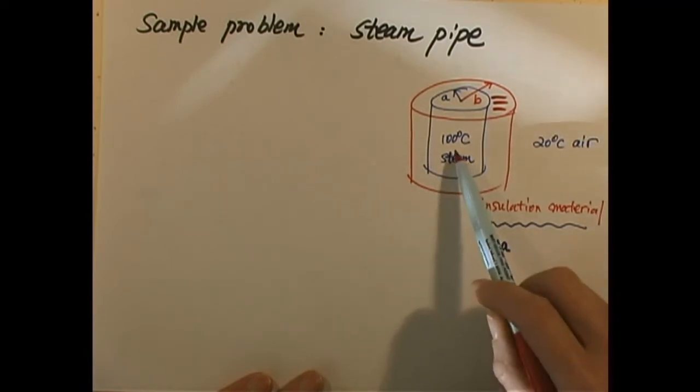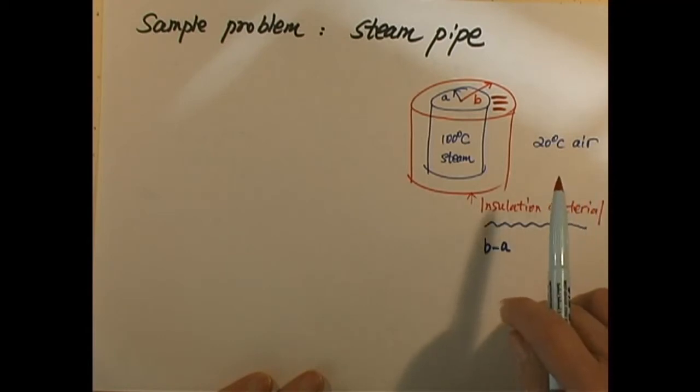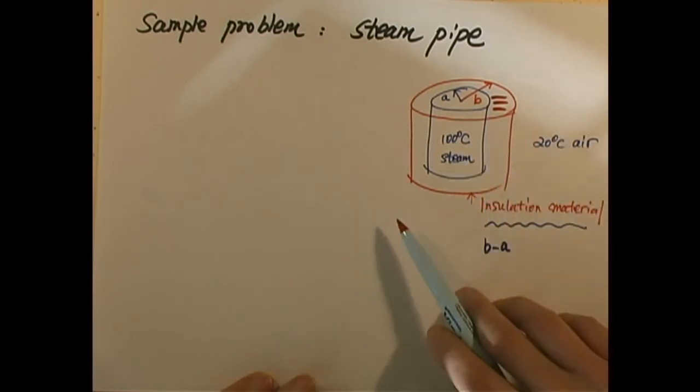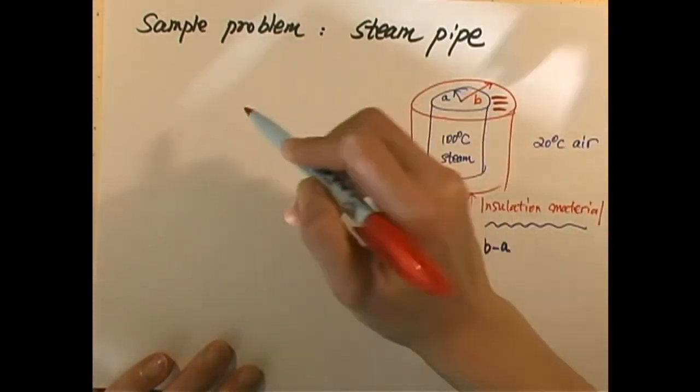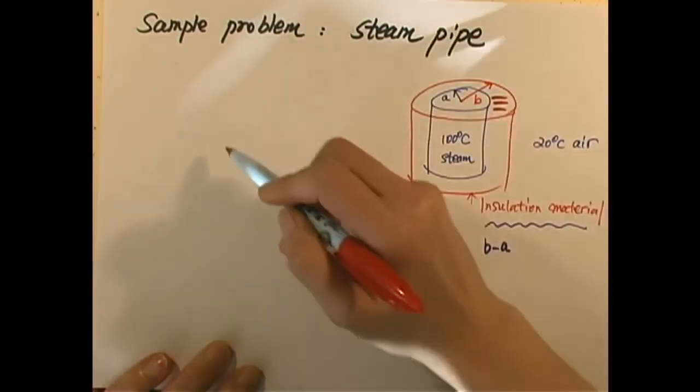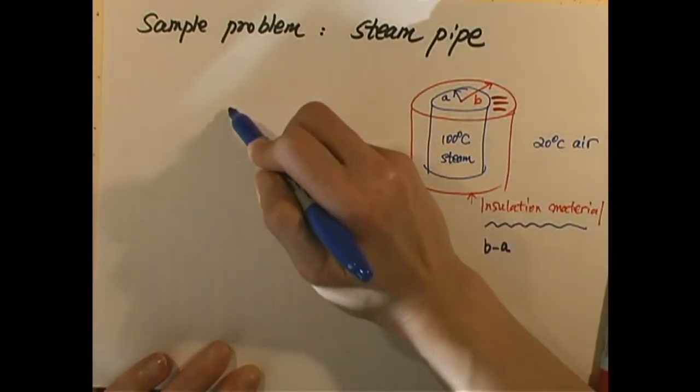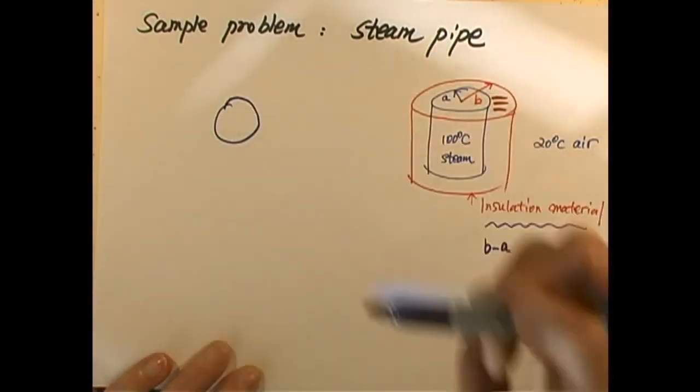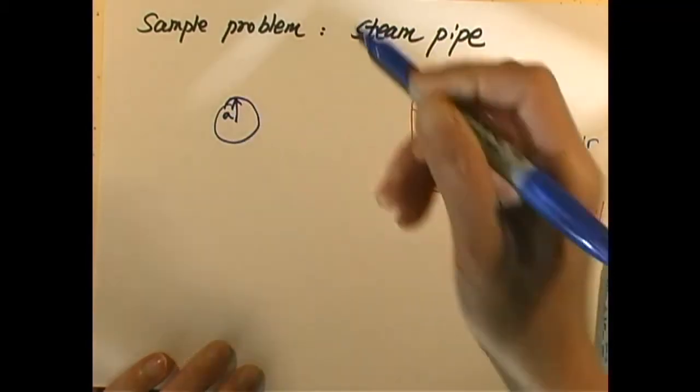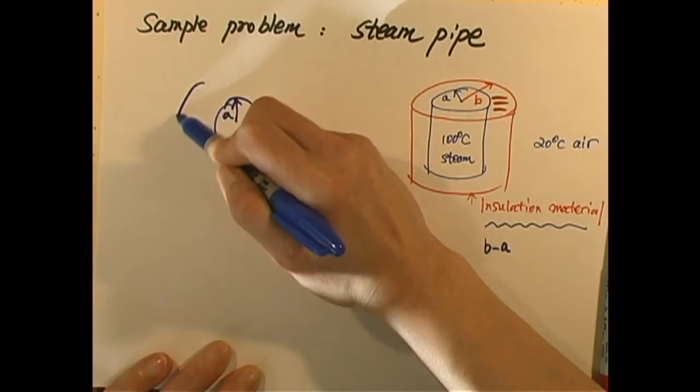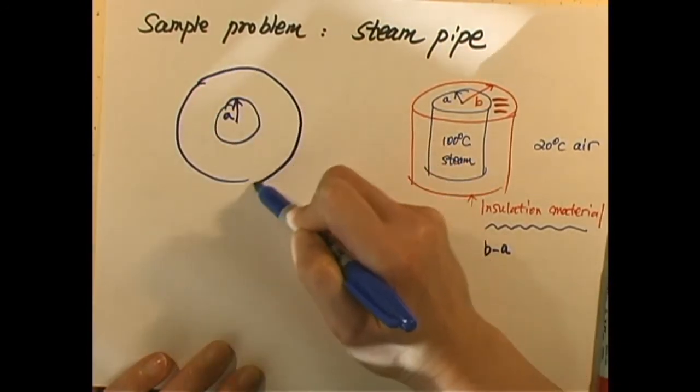If inside is 100 degrees Celsius and outside 20 degrees air, the question is what kind of power is lost due to this situation. So we want P. How do we deal with this problem? If we view this from the top, this is the steam pipe we view from the top.